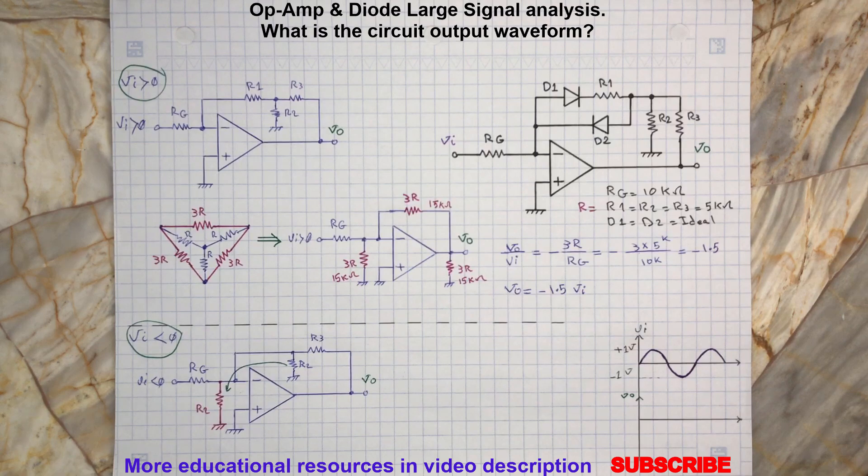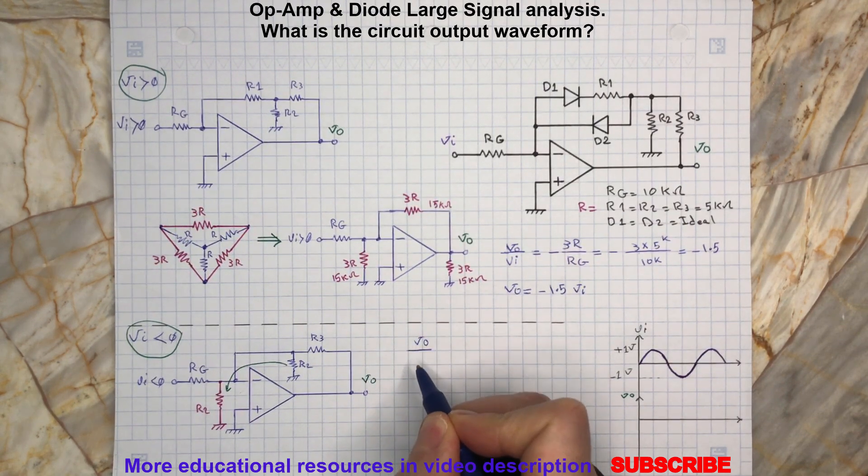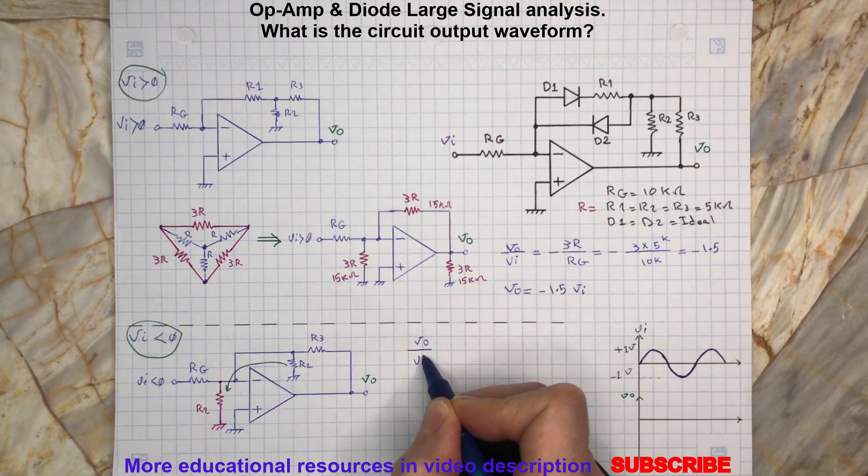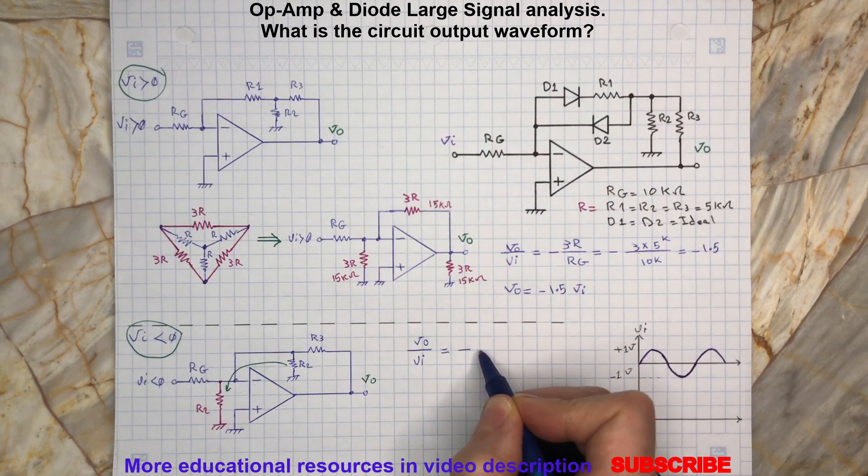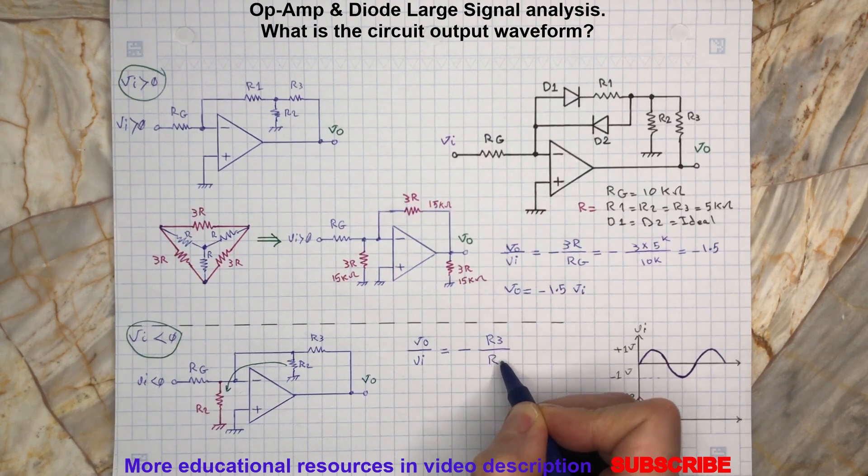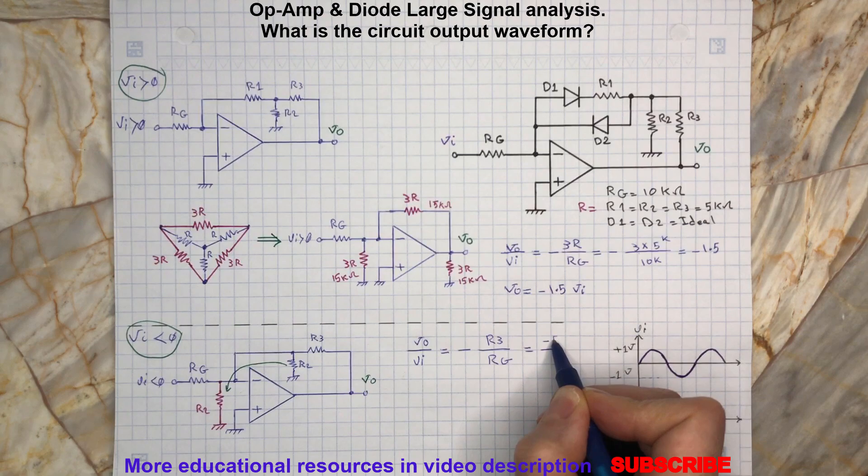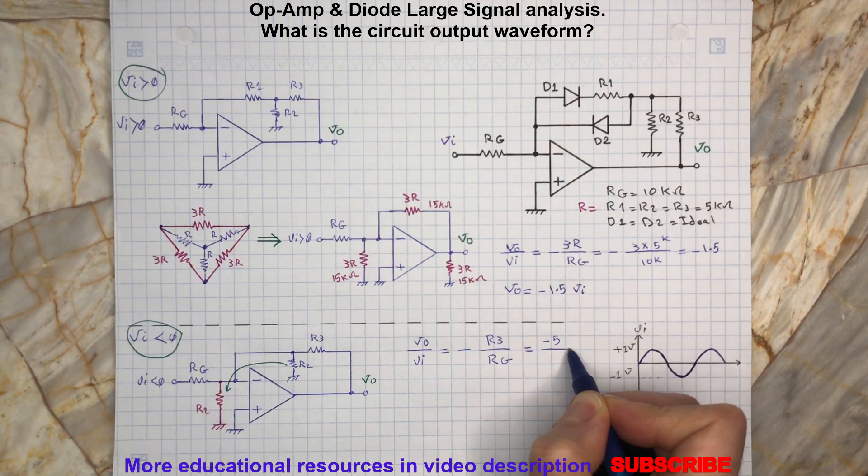This circuit is again an inverting op-amp amplifier with the following circuit input and output relationship.